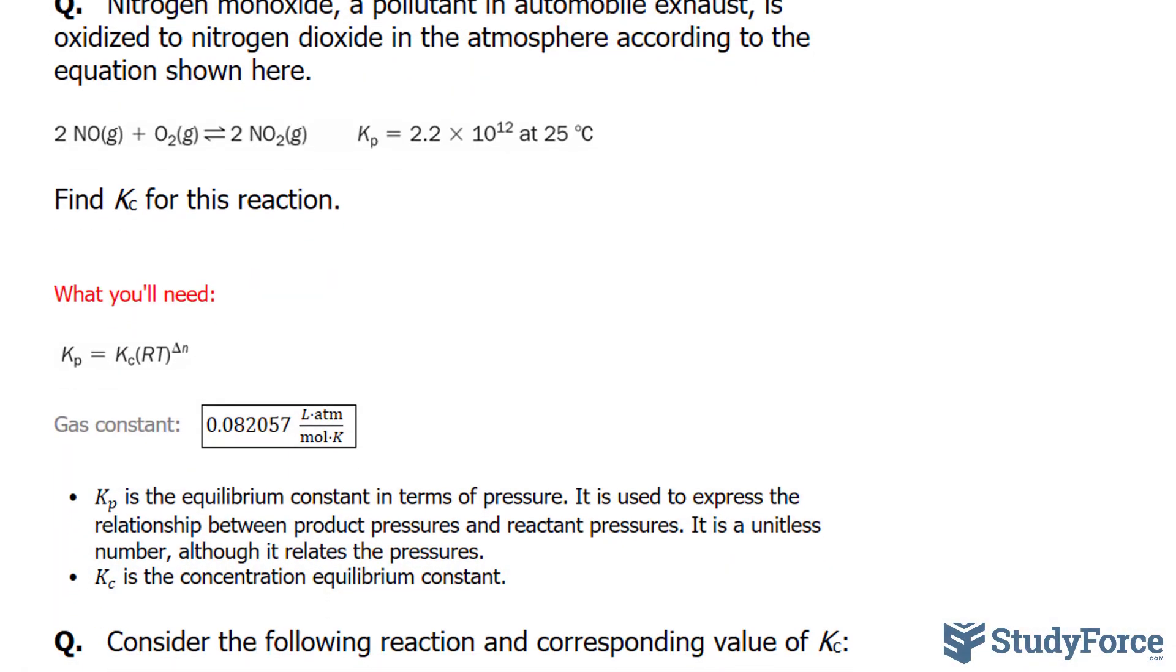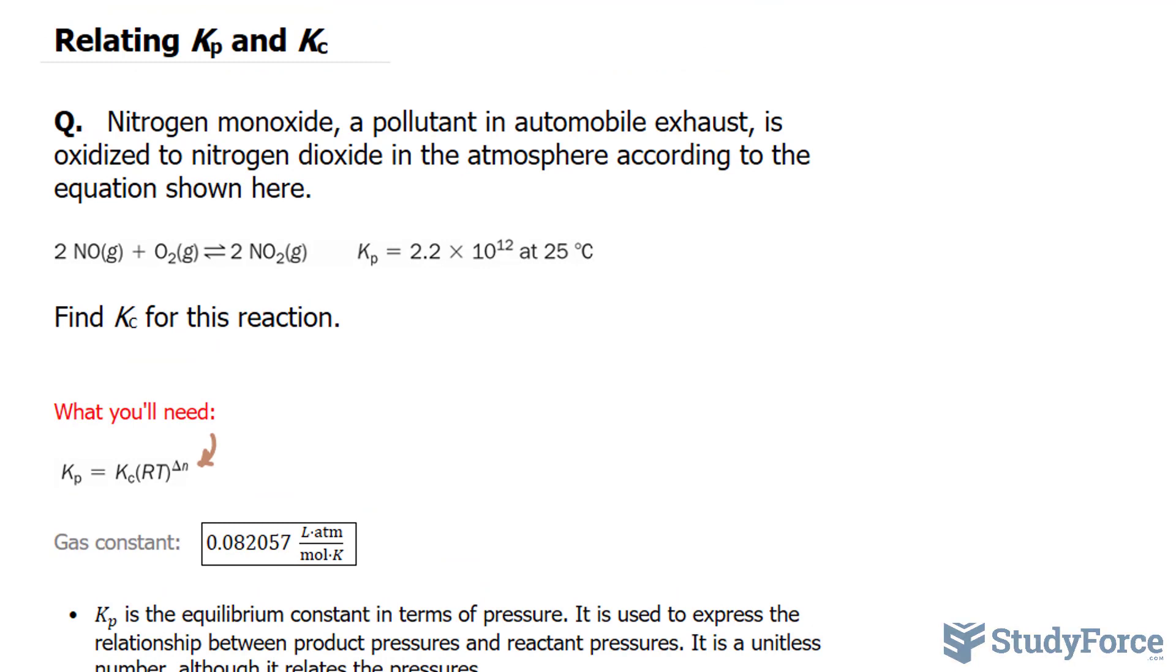Now before we start, Kp is the equilibrium constant in terms of pressure and Kc is the constant in terms of concentration. The way they are related is through this formula shown here. So let's take a look at what we've been given. We've been given the pressure constant, 2.2 times 10 to the power of 12 at 25 degrees Celsius.